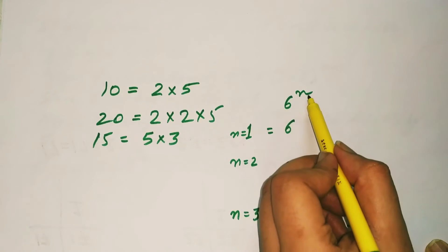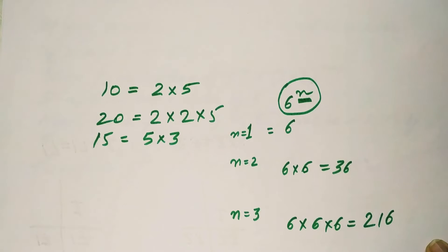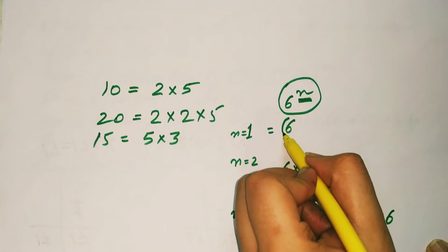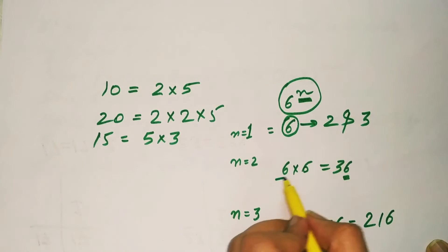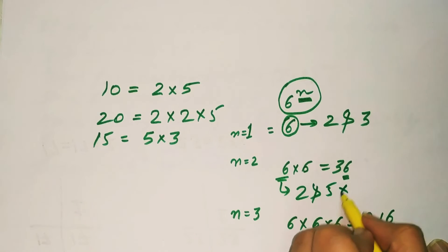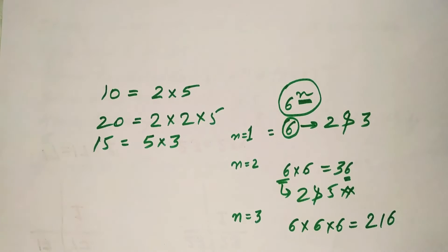Now we'll keep on substituting the value of n in 6 raised to the power n. We'll find out that not every number ends with 0. Why? Because prime factors of 6 are 2 and 3. The prime factors of 6 are not 2 and 5. Hence, it does not end with 0.